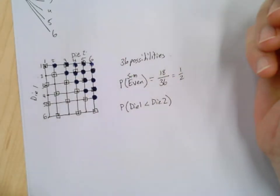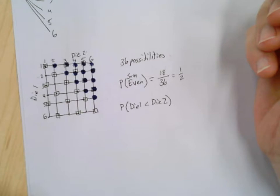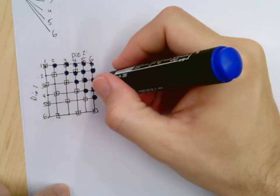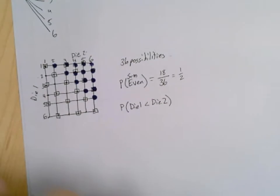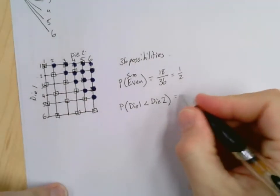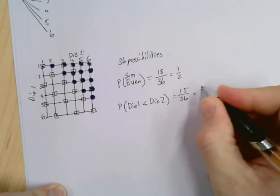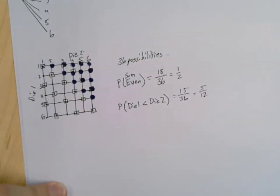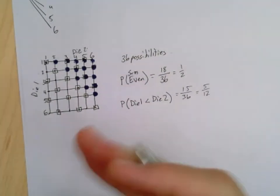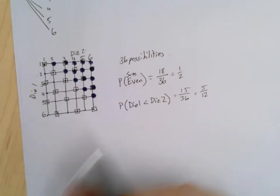Now you count up the dots. Five plus four is nine, plus three is twelve, plus two is fourteen, plus one is fifteen. So therefore, fifteen out of thirty-six, or five out of twelve. So you can kind of see how this might be helpful in organizing something where you have two different things.